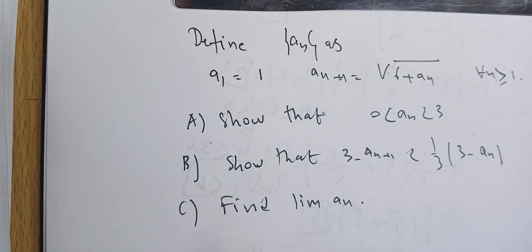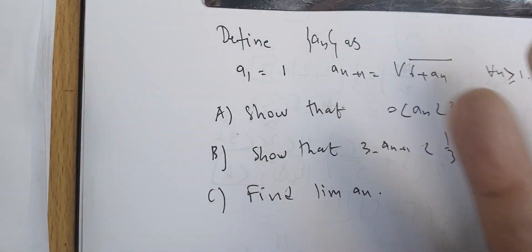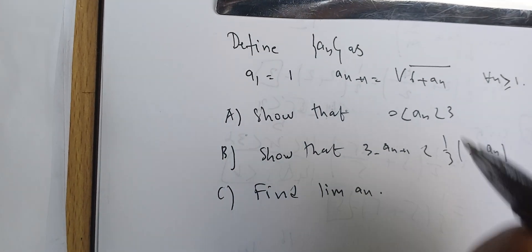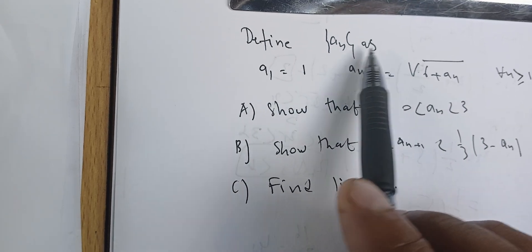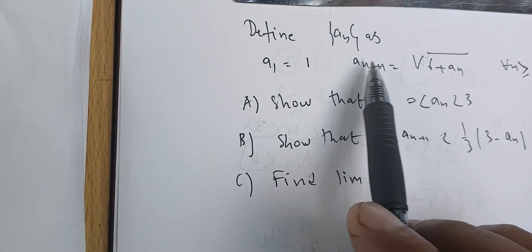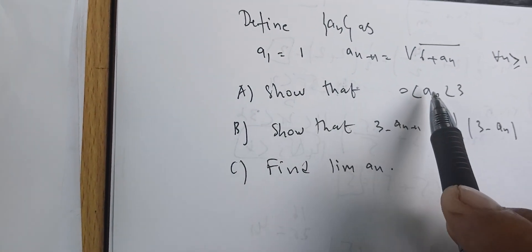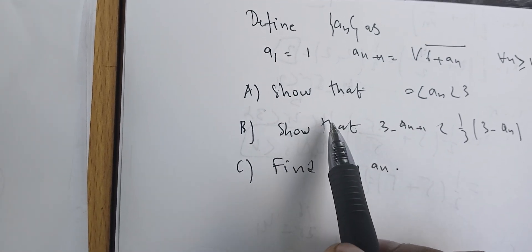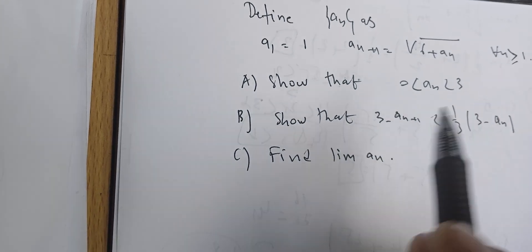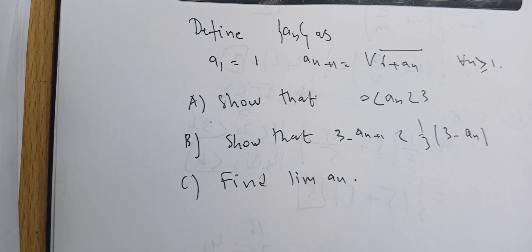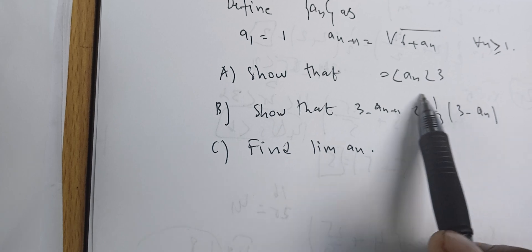The aim of this problem is to show how we can get the limit of a sequence by finding an upper bound of the difference. We are given the sequence a defined by its first term a₁ = 1 and aₙ₊₁ = √(6 + aₙ). We will prove that aₙ is between 0 and 3, then show that 3 − aₙ₊₁ < (1/3)(3 − aₙ), and after that find the limit.